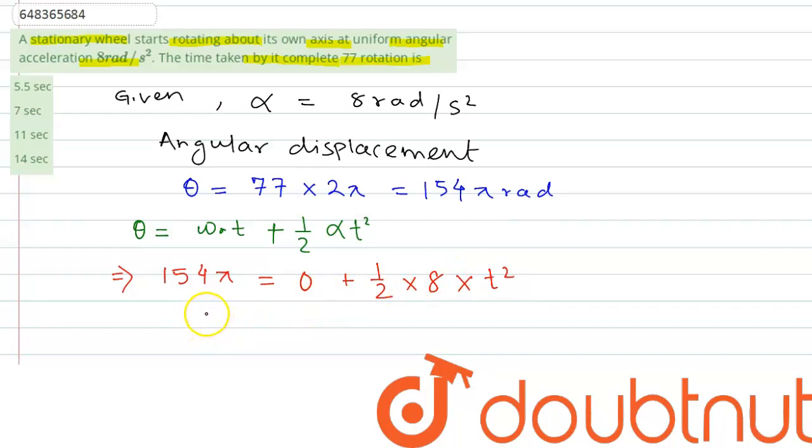So now this will give us, if we simplify this, t square equals 154 pi into 2 divided by 8. Now if we calculate, our time period t will be 11 seconds.